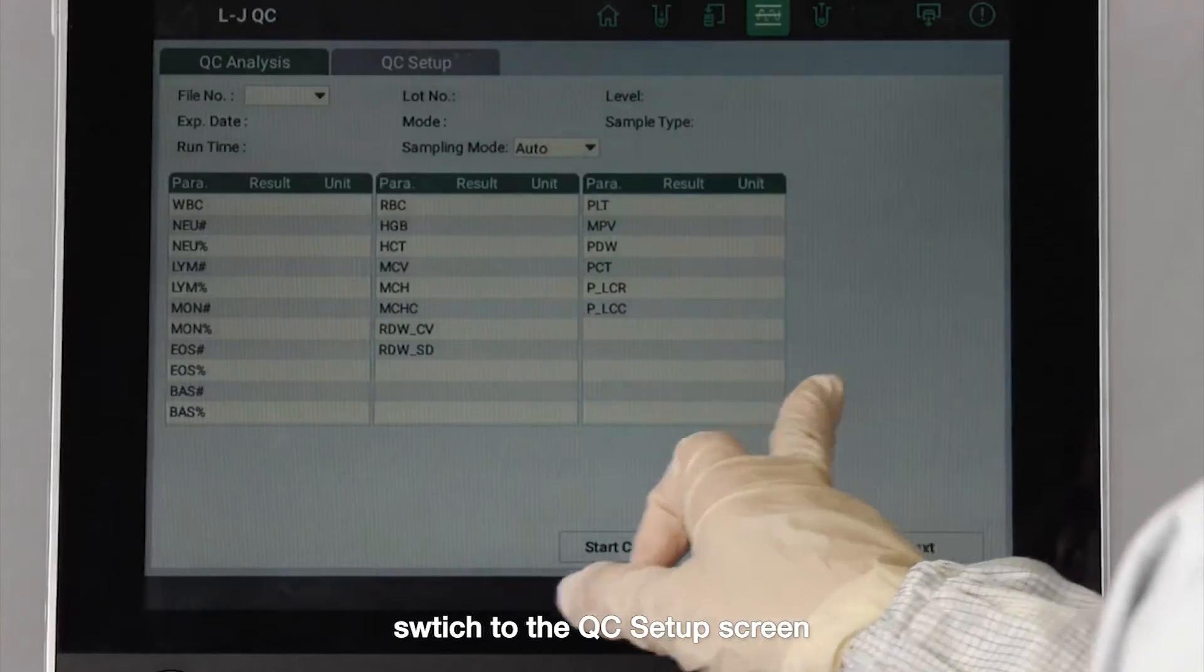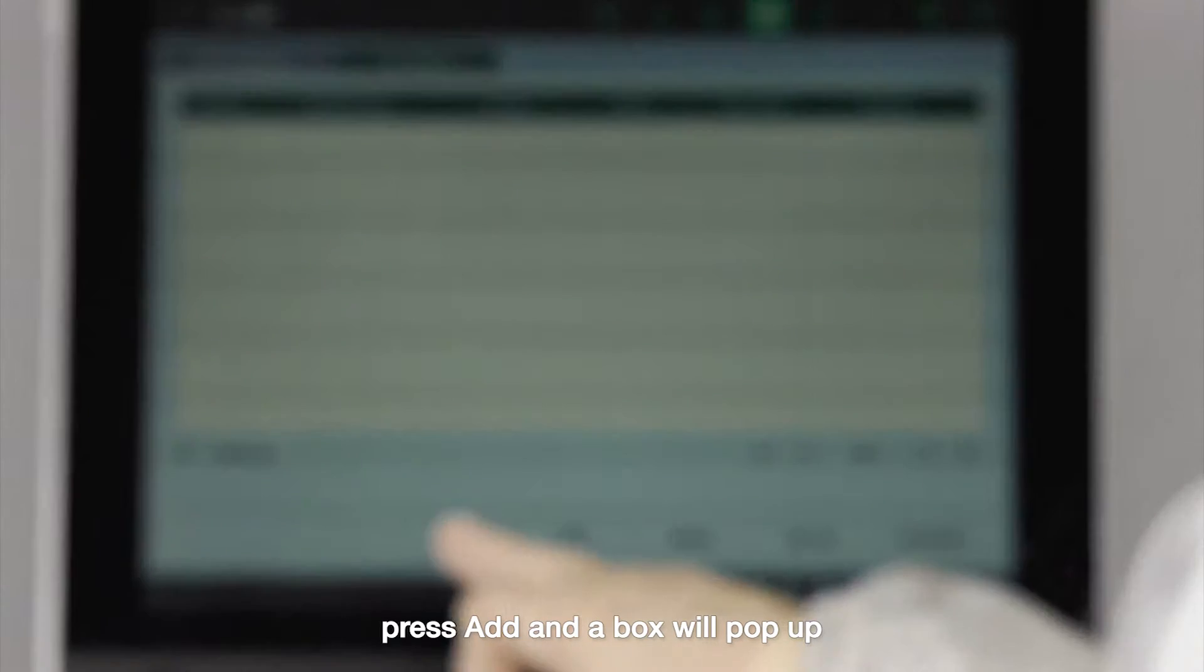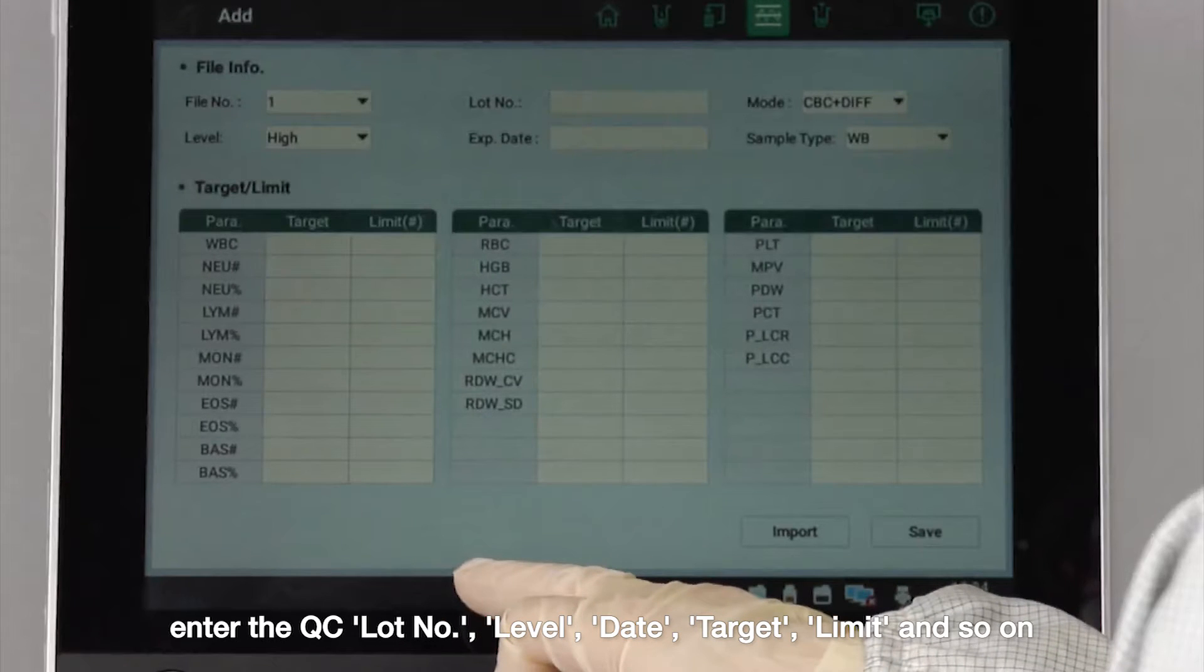Switch to the quality control setup screen. Press add and a box will pop up. Enter the quality control lot number, level, date, target, limit and so on.